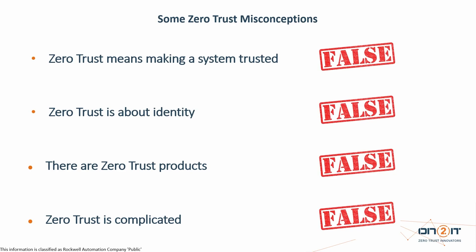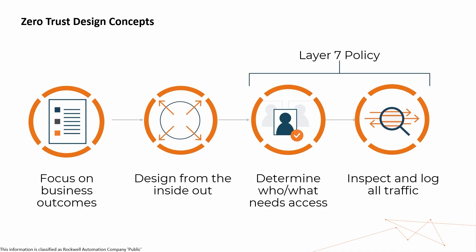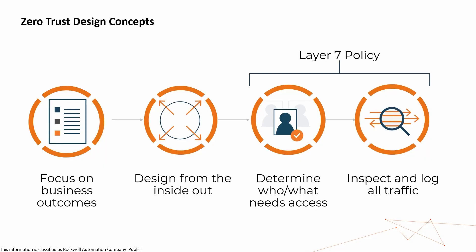There are nine things you need to know to understand and do zero trust. The four design concepts: First, focus on the business drivers — what is your business trying to achieve? Second, design the system from the inside out, starting with the data or assets you're trying to protect. If you don't know what you're protecting, it will never work. Third, determine who or what should have access to any particular resource — need to know, least privilege, but enforce it. We've talked about least privilege forever, but we never enforced it.